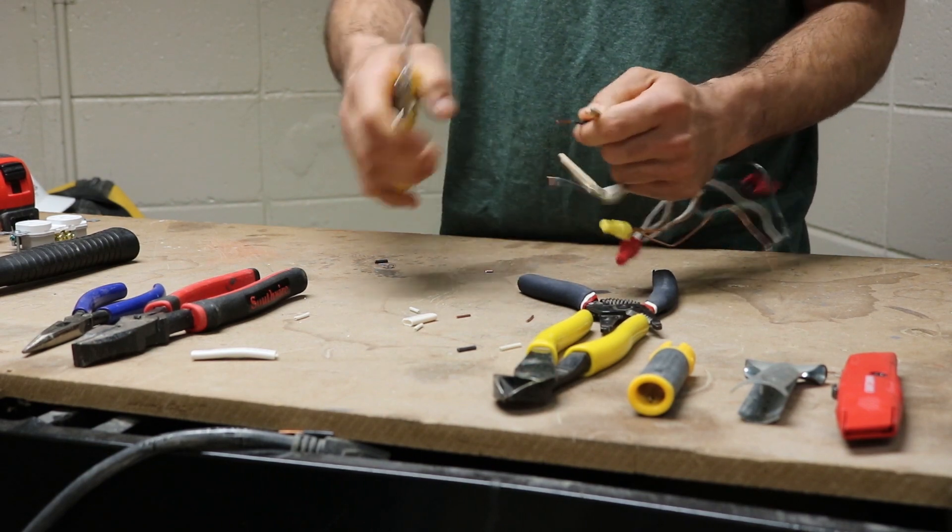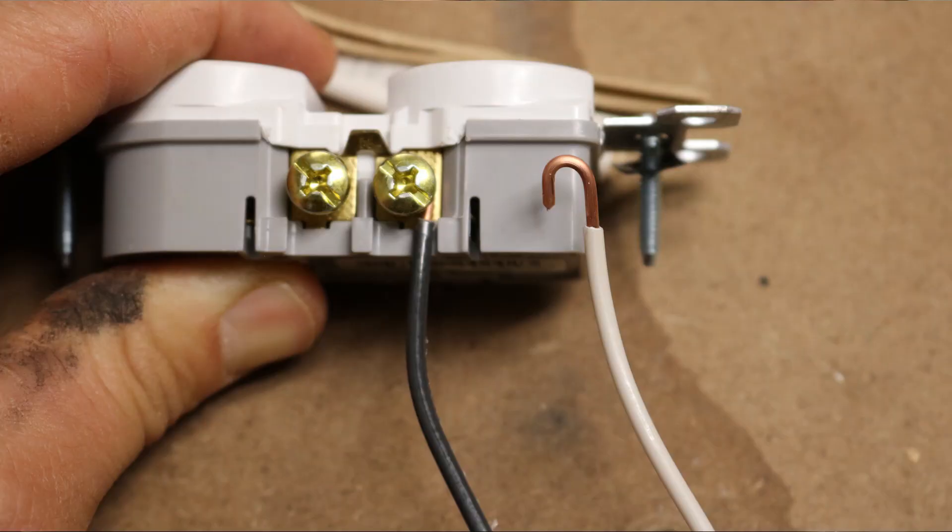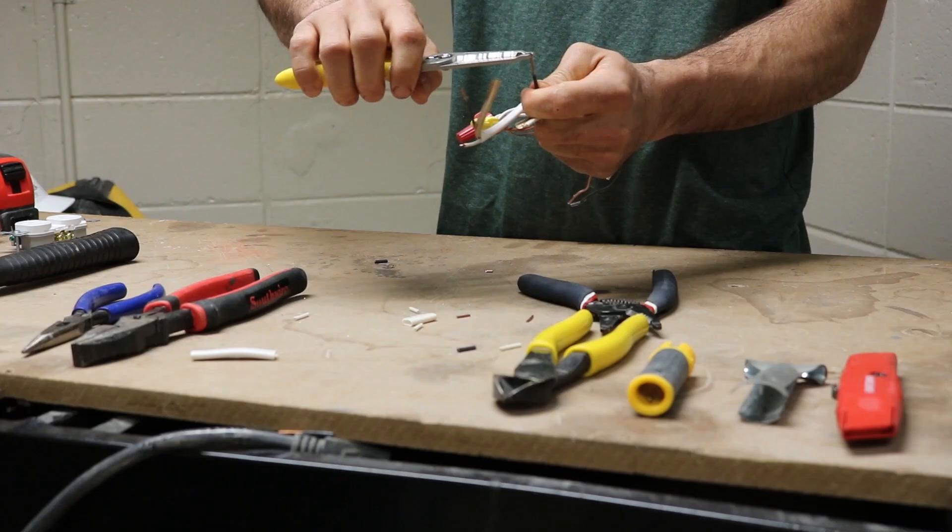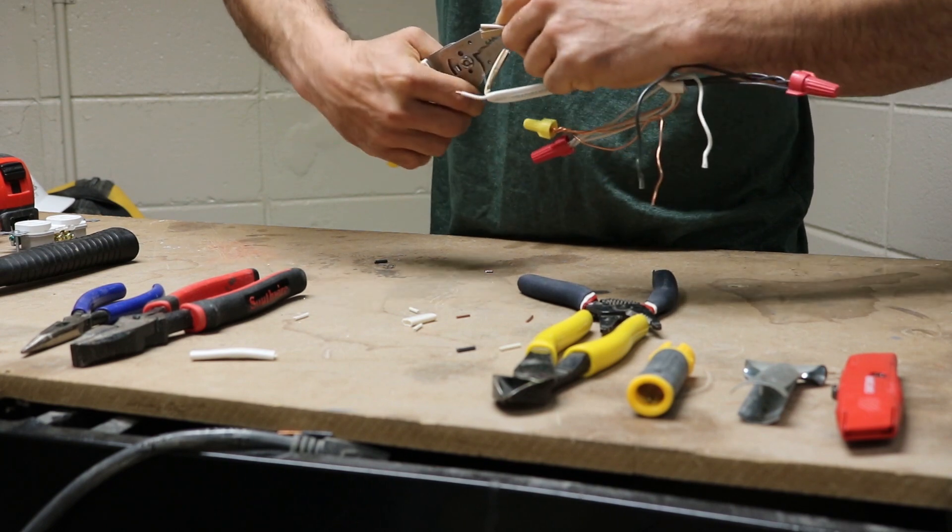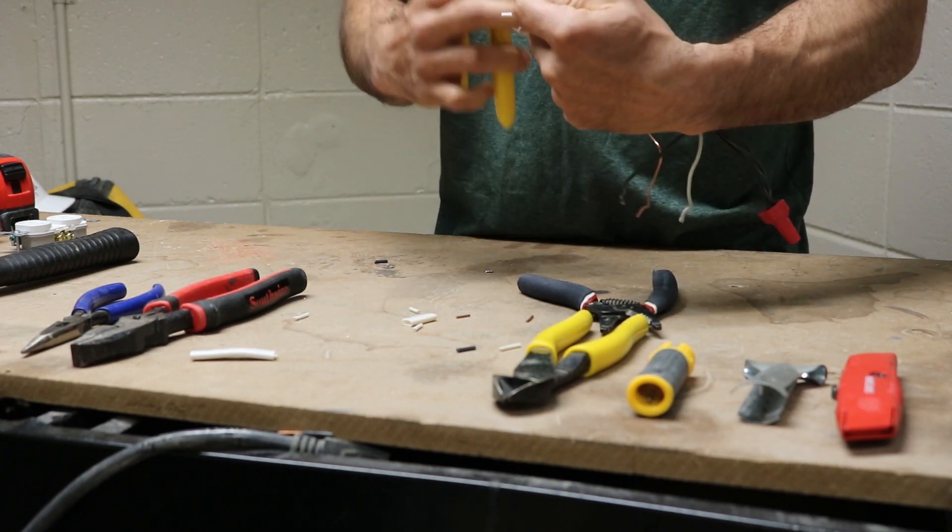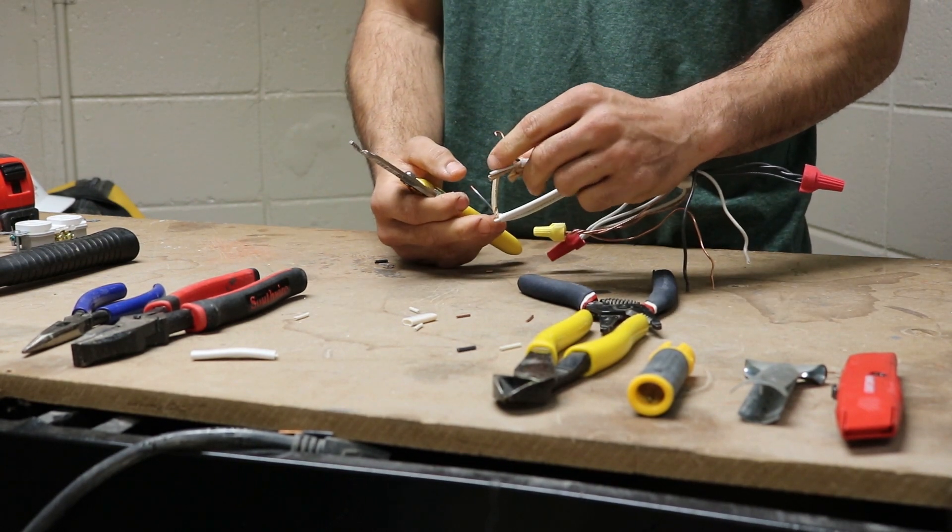Another use for your strippers are bending your hooks. So when you're bending hooks to connect to your terminal screws, you will strip about three-quarters of an inch of wire off. You'll grab the wire at the top, and you'll roll it over and bend a nice little hook right there. And that will fit right over your terminal screws.